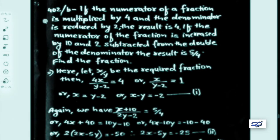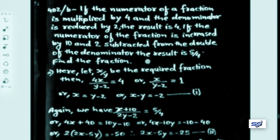Question 402b: If the numerator of a fraction is multiplied by 4 and the denominator is reduced by 2, the result is 4. If the numerator is increased by 10 and 2 is subtracted from double the denominator, the result is 5 upon 4. Find the fraction. Let x upon y be the required fraction, where x is the numerator and y is the denominator.